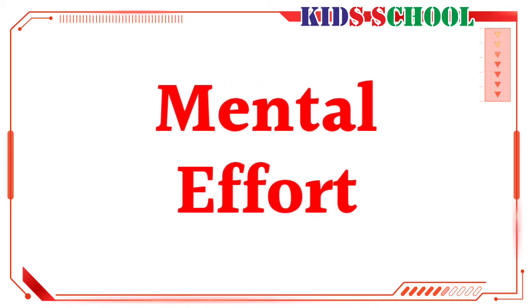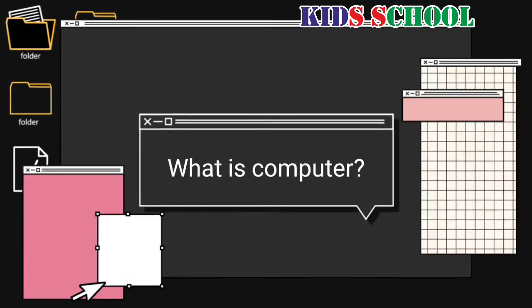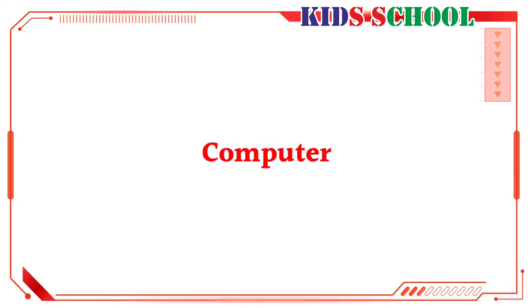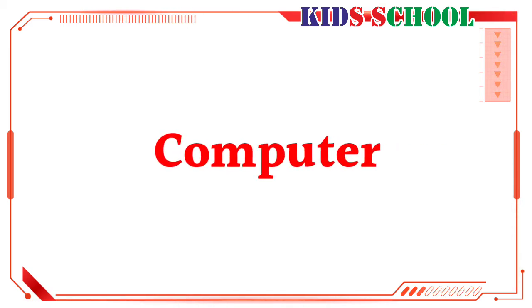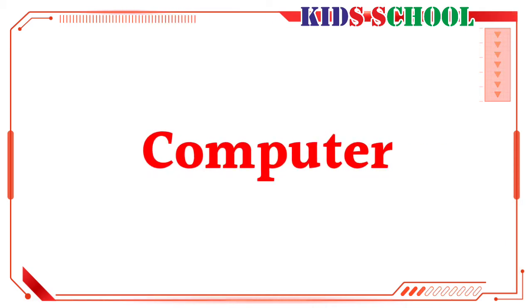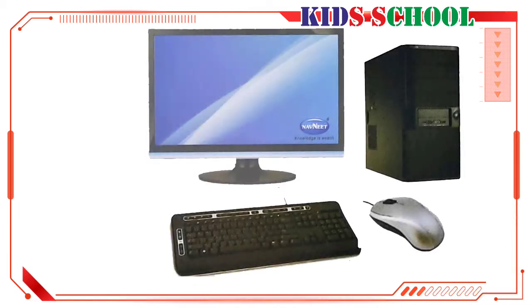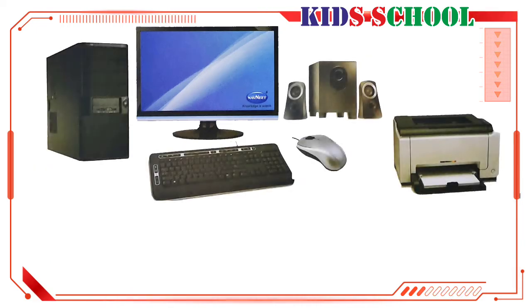Machines like calculators and computers help us do our work easily, quickly, and without any mistakes. Now let's see the definition of a computer. Dear students, do you know what is a computer? A computer is an electronic machine which is made up of different parts like the keyboard, mouse, CPU box, monitor, and printer.